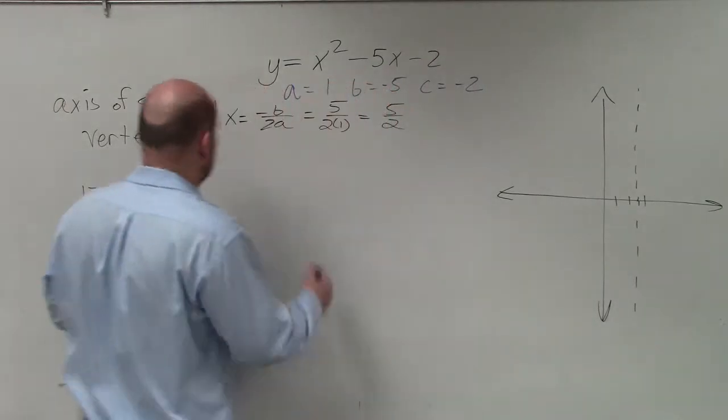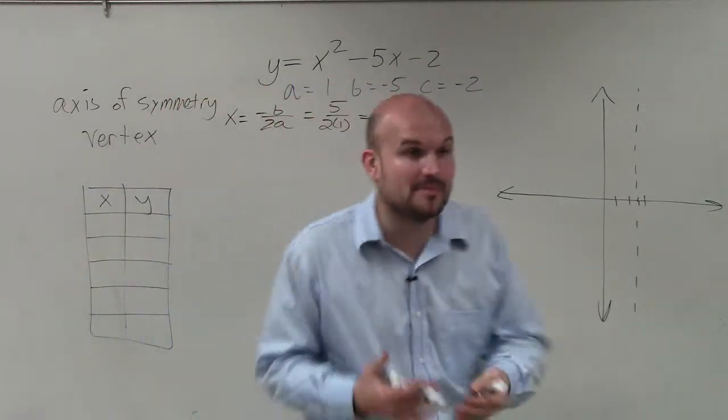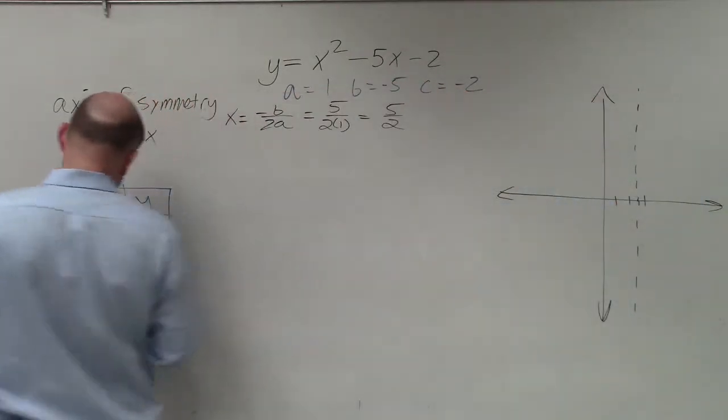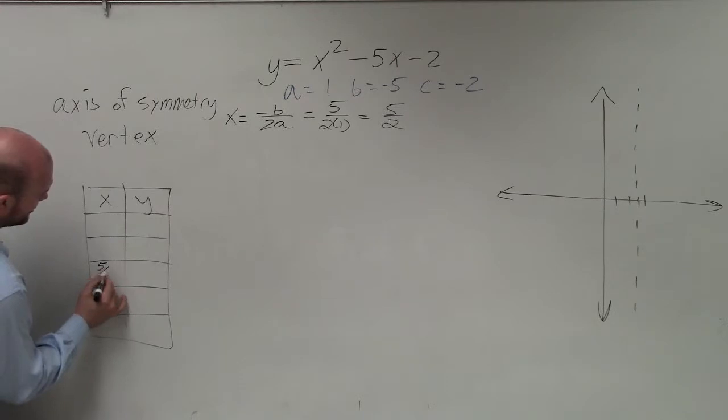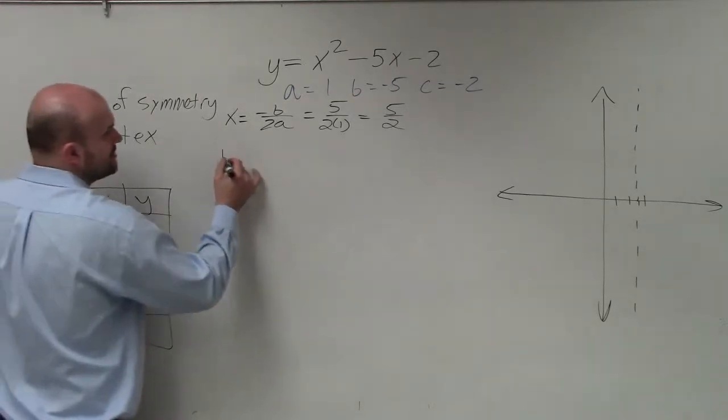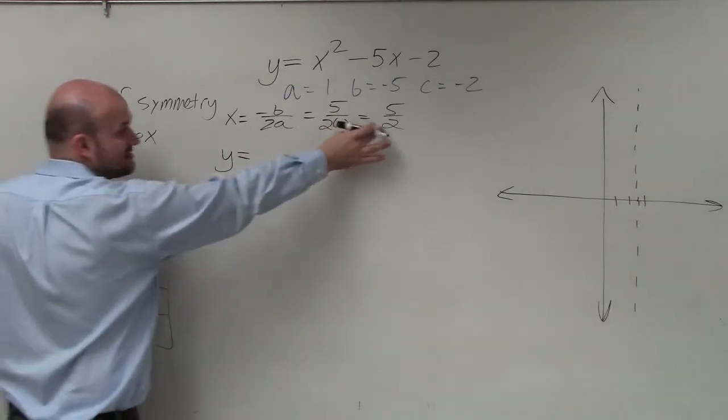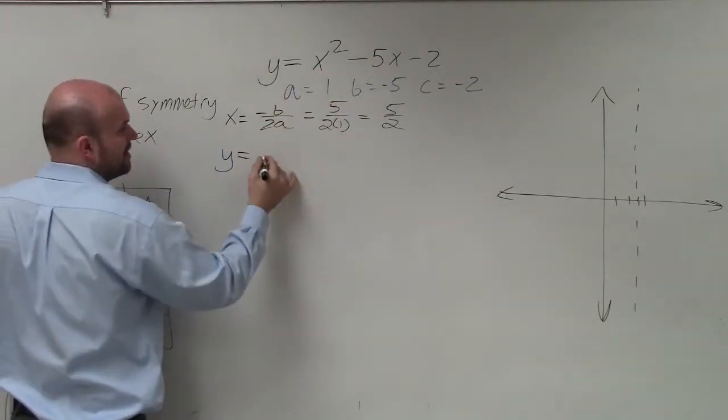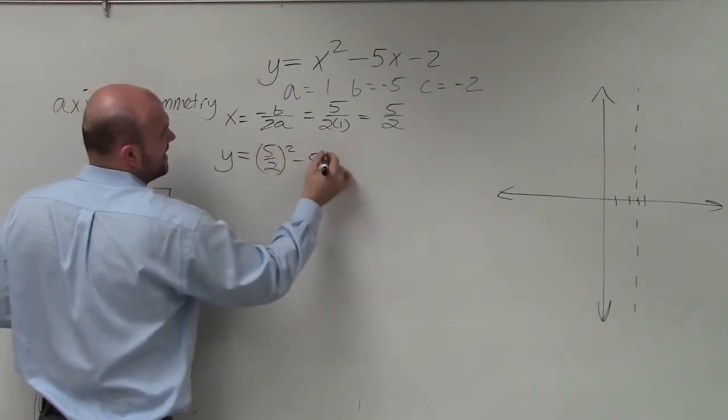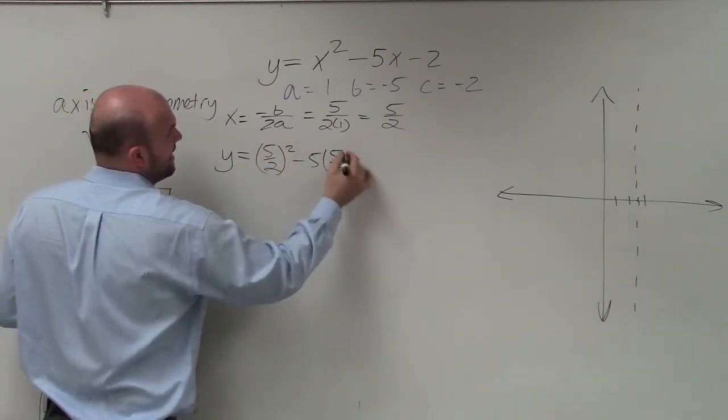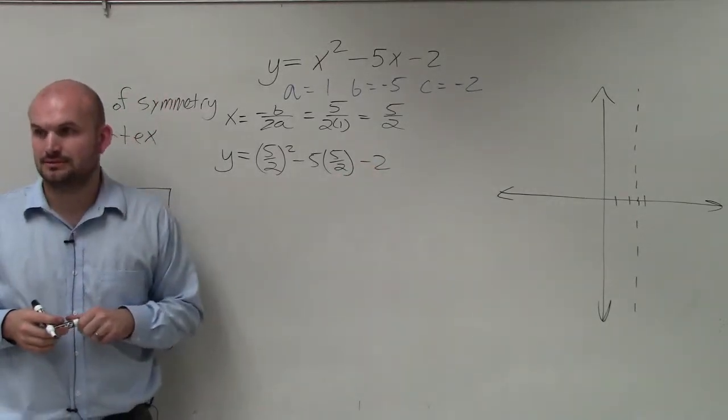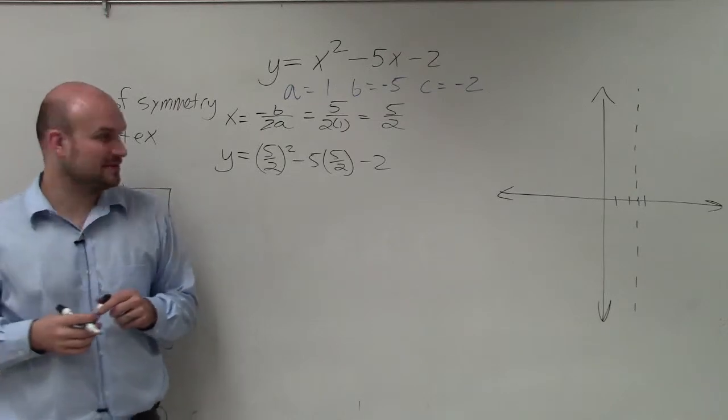Now, the next thing we need to do is we need to find our vertex. Now, remember, the vertex has the same x coordinate as your axis of symmetry. So on my little table here, I'm going to say, all right, the x value of the vertex is 5 halves. What is the y value? So to do that, I need to plug in the x value of my axis symmetry in for x.